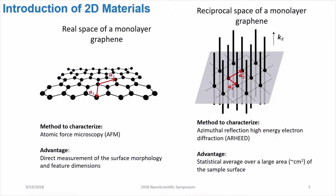To characterize the real space of monolayer graphene, we choose atomic force microscopy because it gives us a direct measurement of the surface morphology and some feature dimensions.